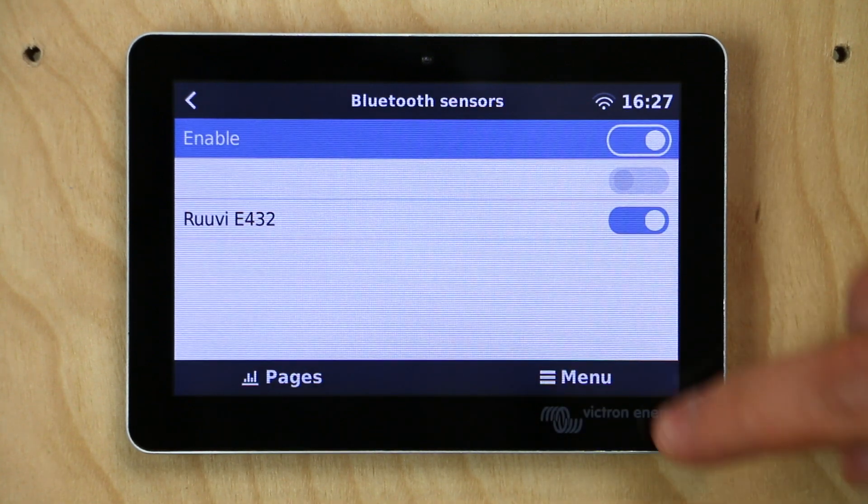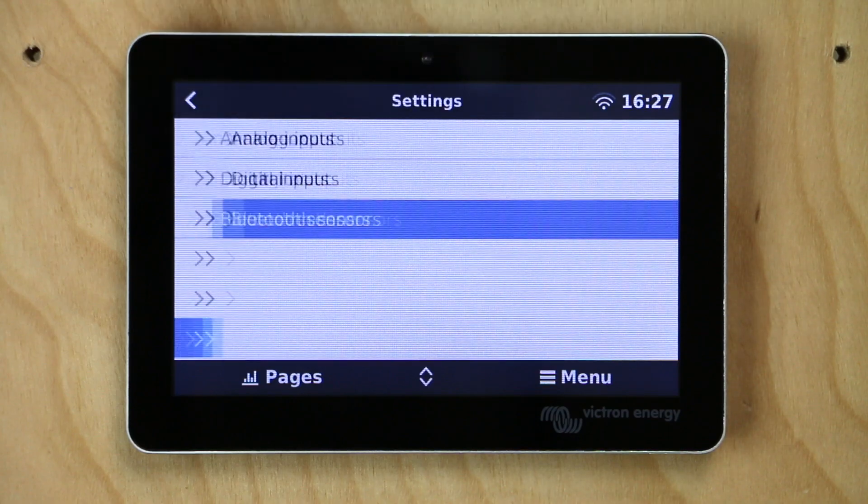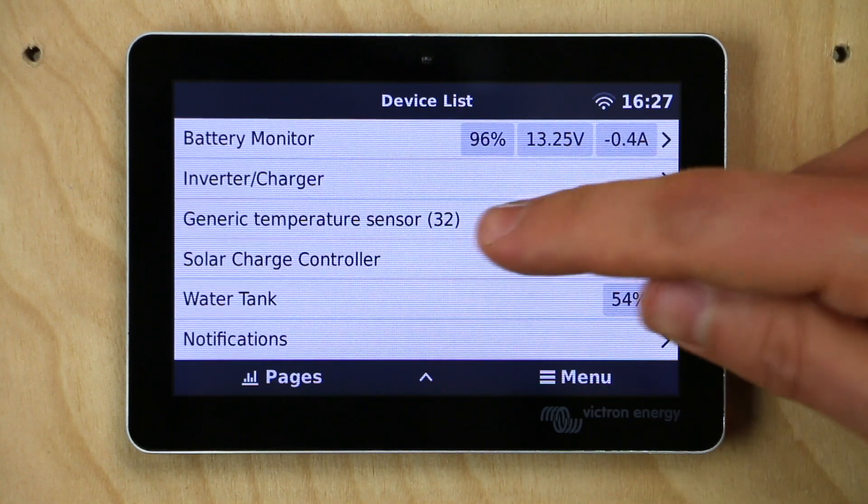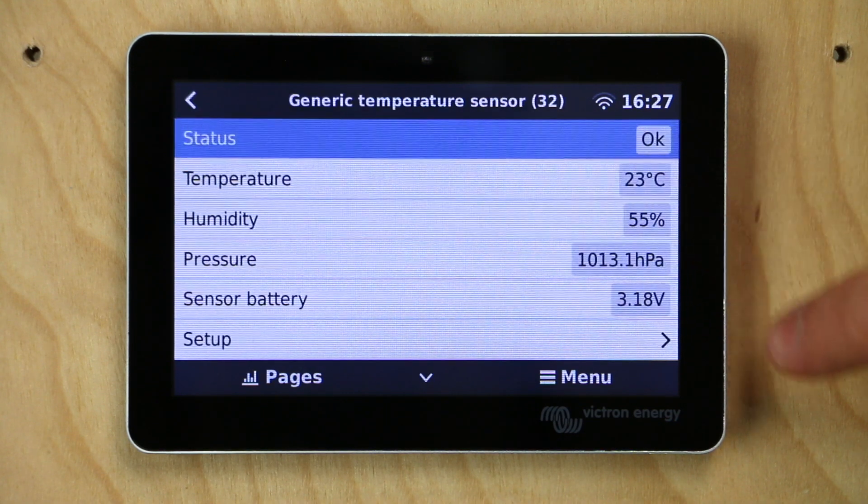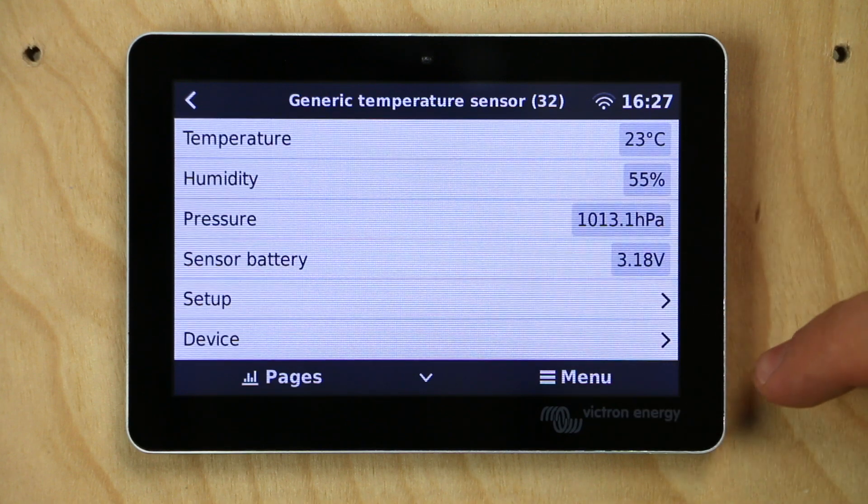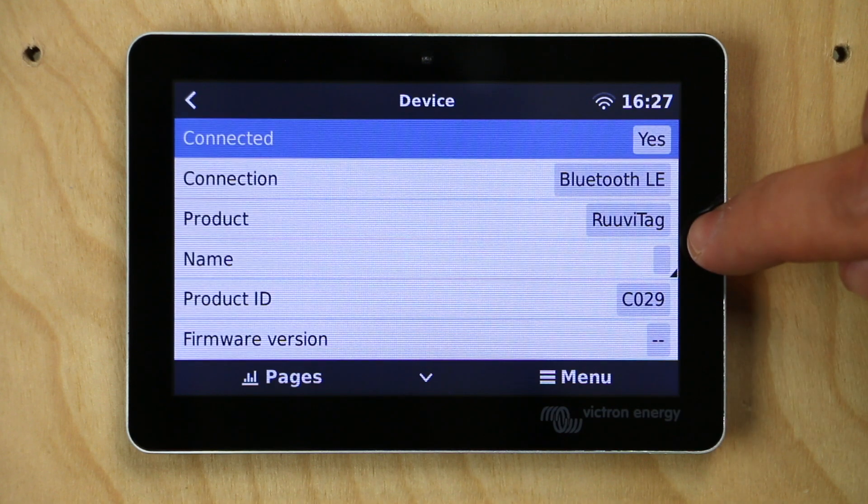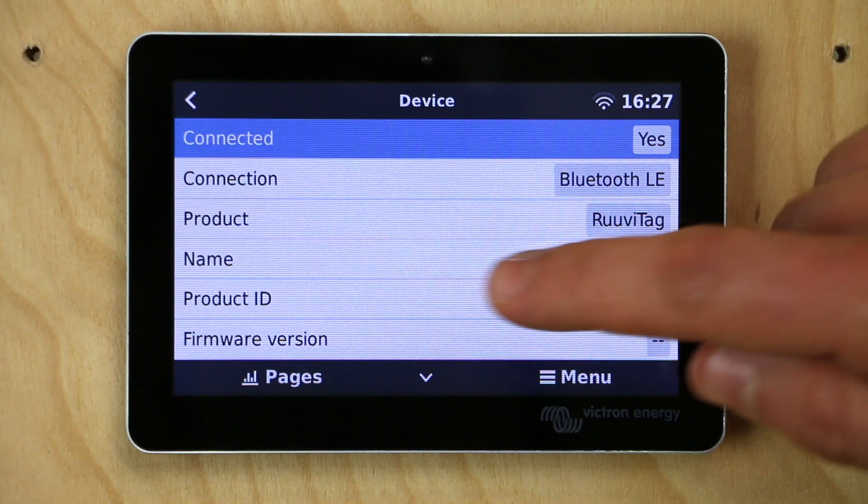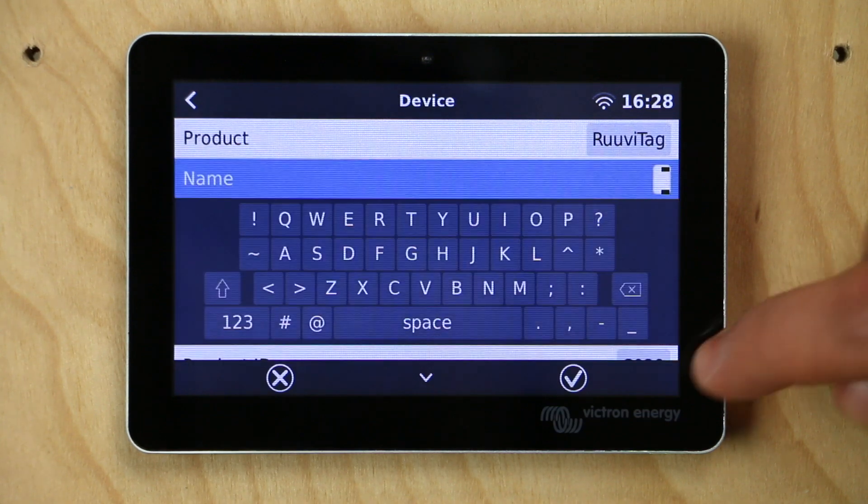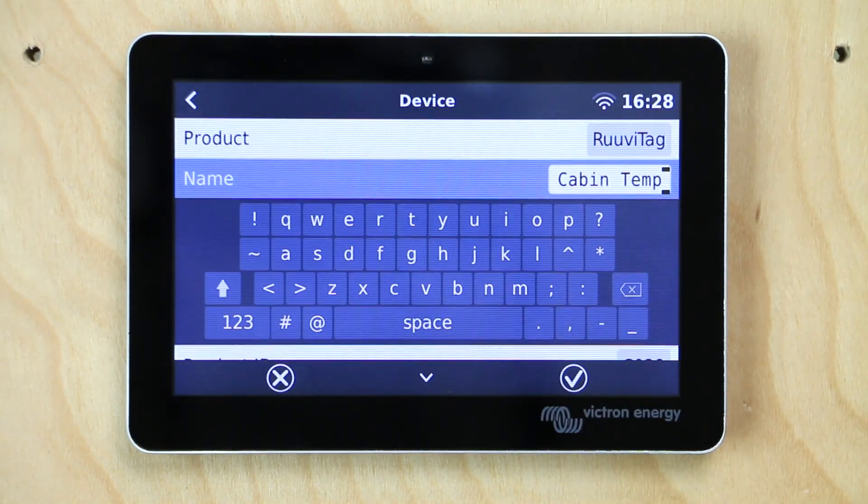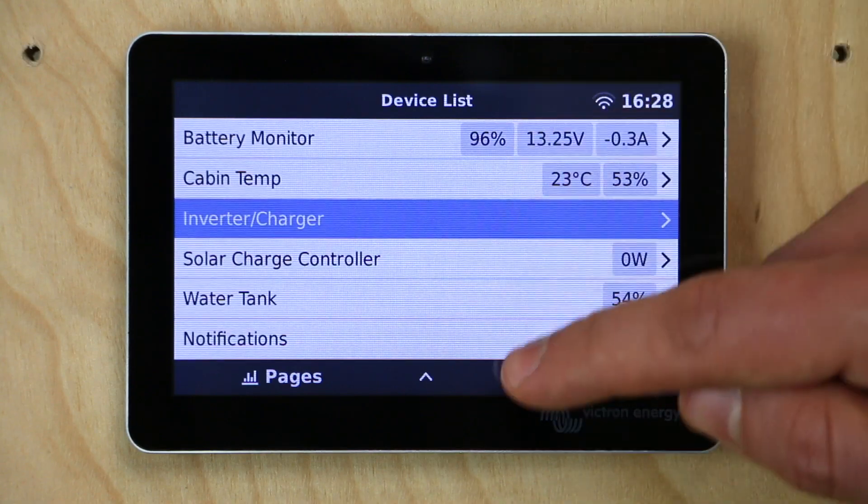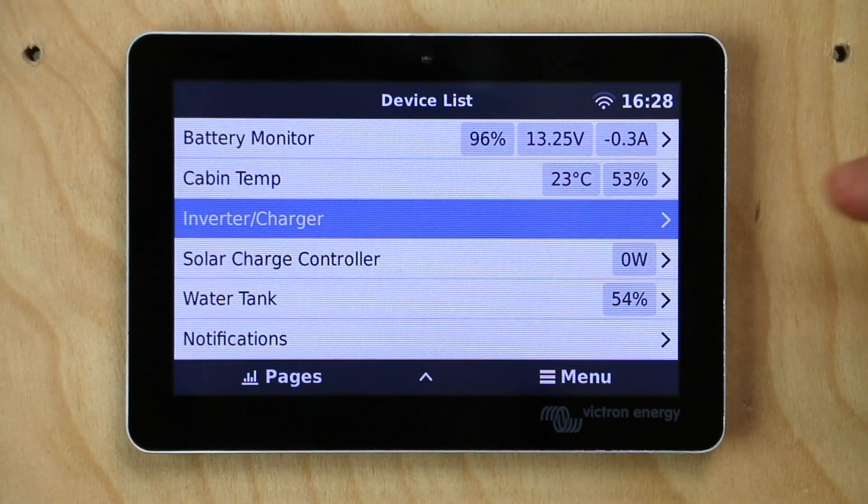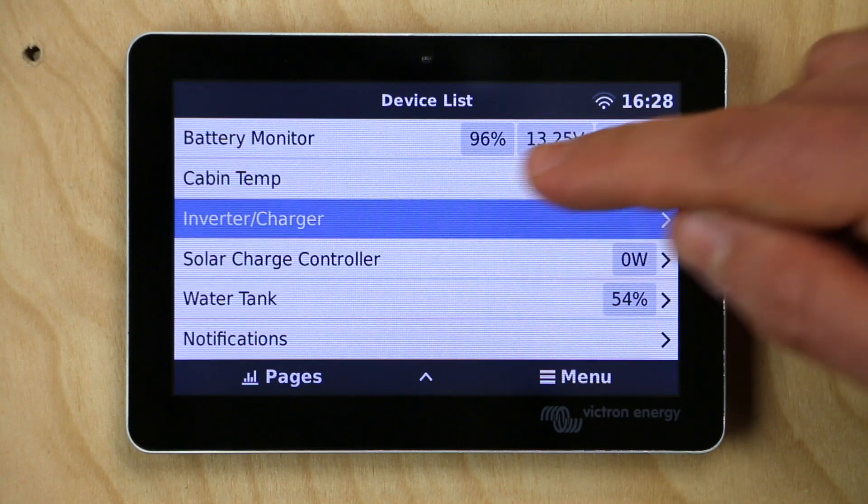So we'll go ahead and set the Ruuvi tag aside. Let's go in and give this a better name. What we can do is hit the back button. So E432 is our sensor. If we go all the way back to the device list, you can see it says generic temperature sensor 32. As you can see, we have some data already coming in: 23 degrees Celsius, 55% relative humidity. Let's click on it. And we need to go in and name it first so we know what we're dealing with. Click on device at the bottom. As you can see, it says Ruuvi tag, Bluetooth, low energy. And where it says name, we're going to go in and I'm going to call this cabin temp. All right. So we gave it a custom name of cabin temp. We're going to hit the check mark to finalize it. And now if we hit menu, it's going to take us back to our device list and you can see cabin temp is listed there. And that is all you have to do to bring in a Ruuvi tag to the Cerbo GX.